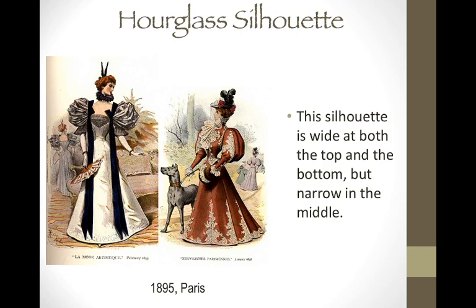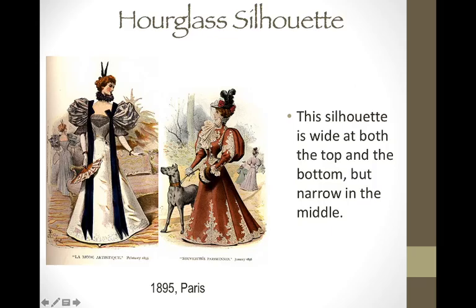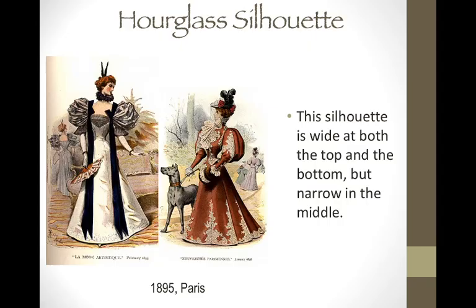The hourglass silhouette was very popular in the 1890s. I want to stress that this was an exaggerated hourglass — not a natural hourglass. It was very wide at the bottom and the top and then very, very narrow in the middle. Women, and you can really see it in these illustrations, had very small waists. The way that they did that was by wearing corsets and bustling, and they would actually break their ribs in order to have a narrower waist.